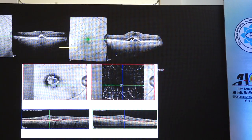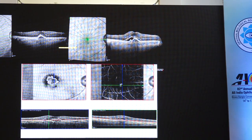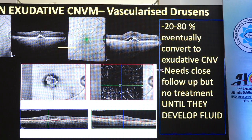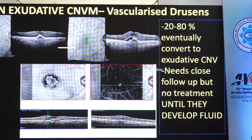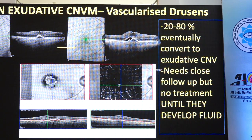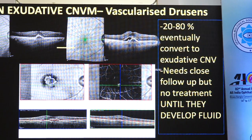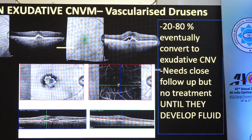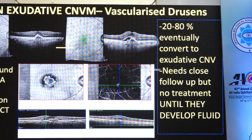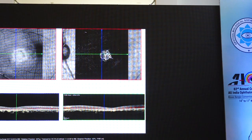Subsequently this patient developed fluid. These are actually the non-exudative CNV patients, of whom almost 20 to 80 percent eventually convert to exudative CNV. These non-exudative choroidal neovascular membrane lesions need close follow-up, but we don't do any treatment until they develop fluid. They are best found on OCT angiography and are very easily missed on fluorescence angiography and also on OCT.